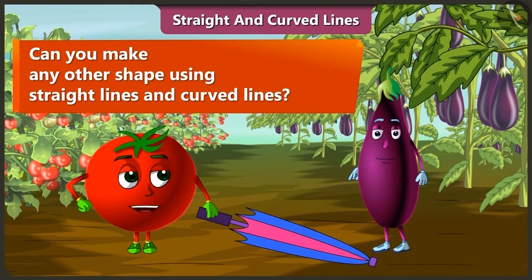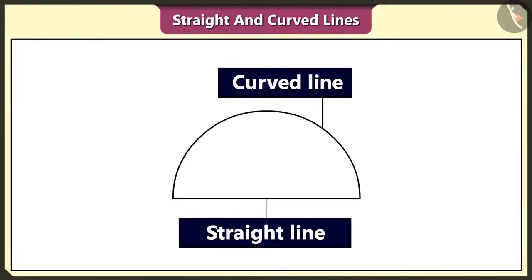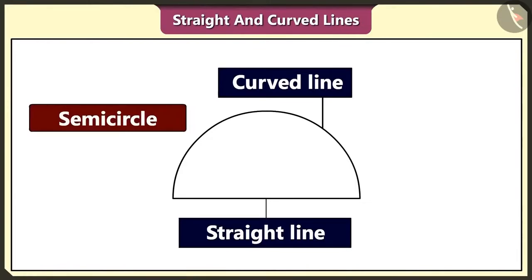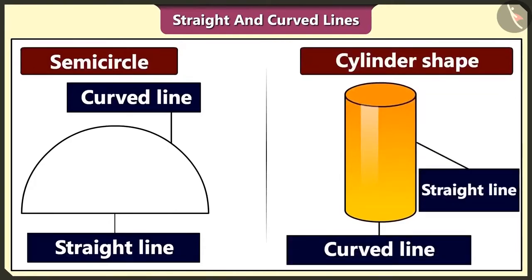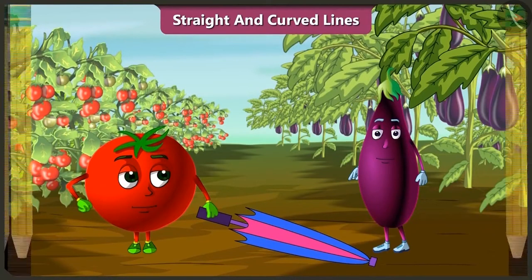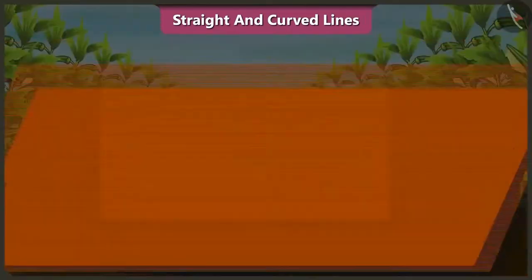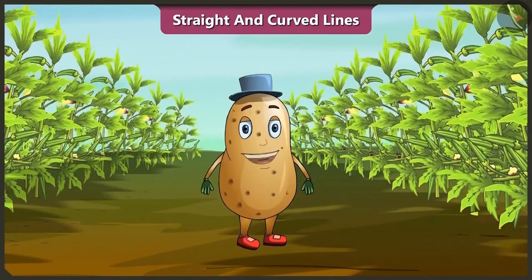Come on, think Bingu. Yes, using a curved line and a straight line, we can make a semicircle like this. And yes, a cylinder shape is also made using curved and straight lines. Ha ha, we had so much fun and enjoyed rain too. Friends, today we learned about the objects and shapes we can make using straight and curved lines. In the next video, we will learn about horizontal line, sleeping line, vertical line, standing line and slanted line. We'll see you next time.